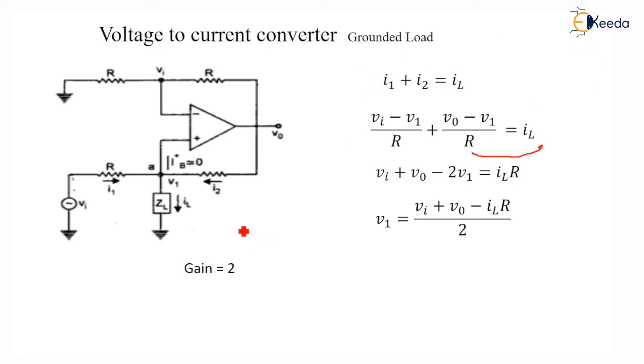In this case, I say Vout is equal to gain into the voltage. The input voltage is equal to V1. Am I right?